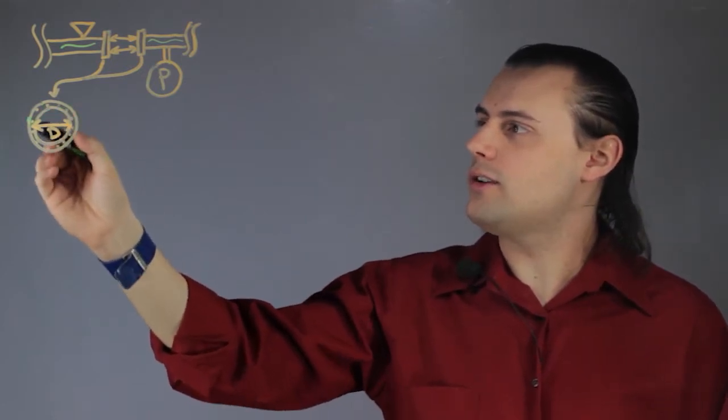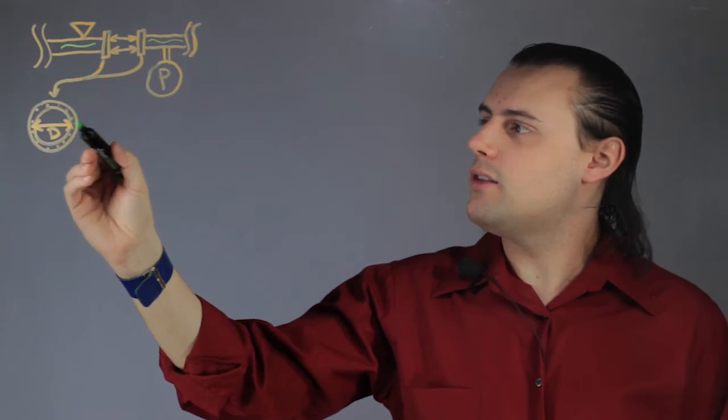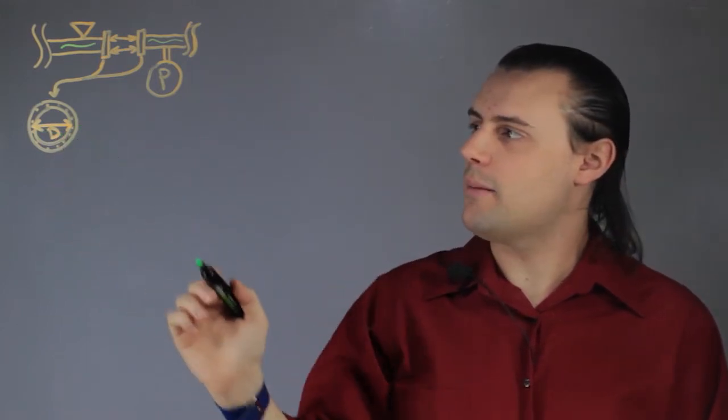Now if we look at a cross-section of one of these bores, we see that the bore will have a diameter, which I denote by capital D.